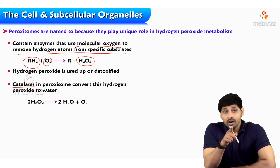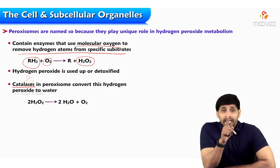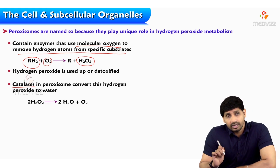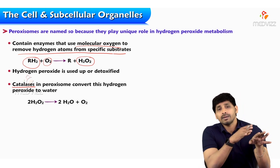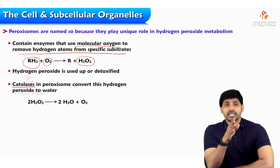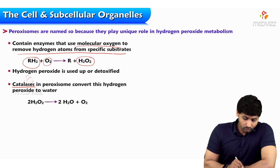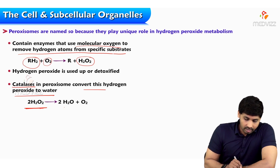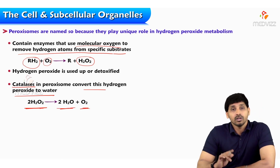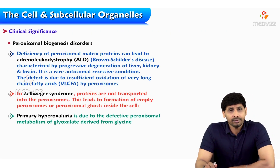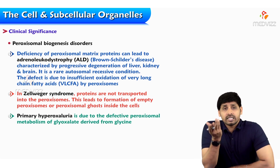The enzyme catalase acts as a marker for peroxisomes, just as acid phosphatase acts as a marker for lysosomes. Catalase is an intracellular enzymatic antioxidant — there are both non-enzymatic and enzymatic antioxidants, and catalase is an example of the latter. Catalase present in peroxisomes converts hydrogen peroxide to water and oxygen, thereby stopping the harmful activity of oxidants inside the cell.